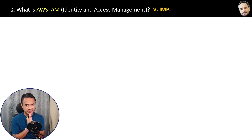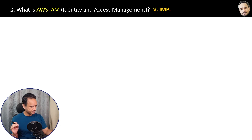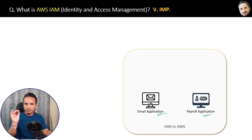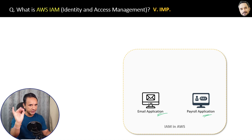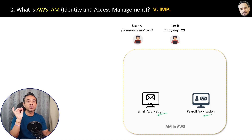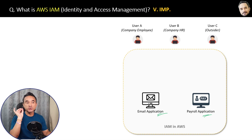Let's understand with the help of an example. Suppose your company is using AWS cloud and there are two applications hosted inside it: one is an email application and another is the payroll application. Now there are three users trying to access these apps. User A is a regular employee of your company, User B is the HR of your company, and User C is someone outside your company — not an employee.